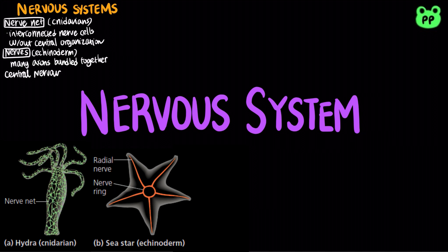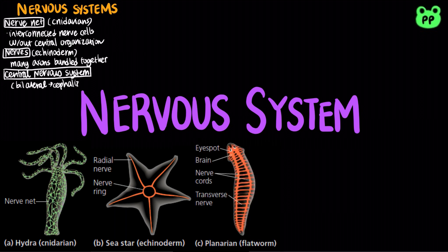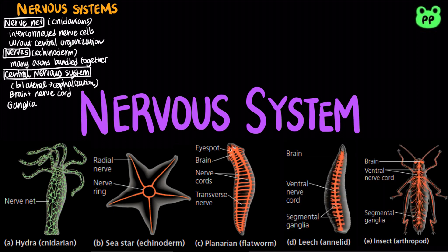Bilaterally symmetrical animals exhibit cephalization, which is the clustering of sensory organs at the front end of the body. Relatively simple cephalized animals such as flatworms have a central nervous system, which consists of a brain and longitudinal nerve cords.